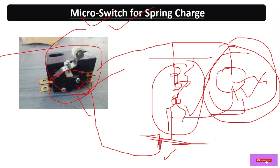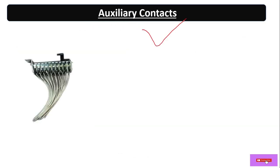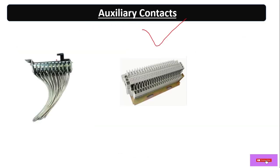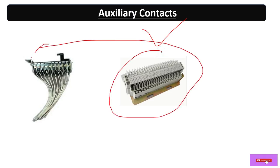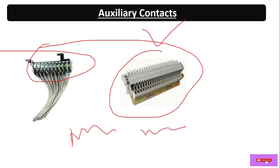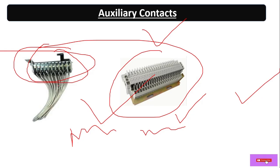The ACB also has external auxiliary contacts — normally open and normally closed — for on condition, off condition, and trip condition. Through the auxiliary contacts terminal box we can take the status signals.